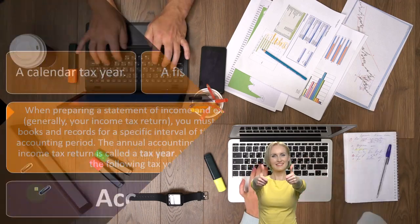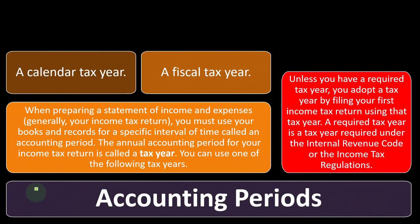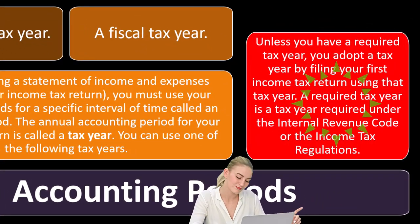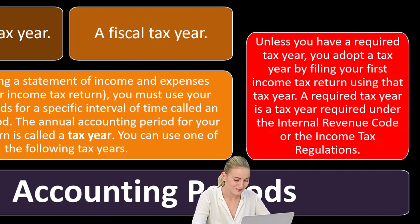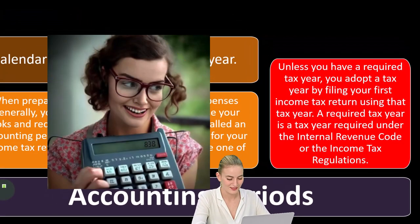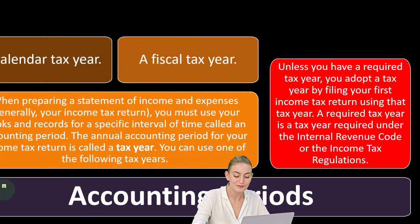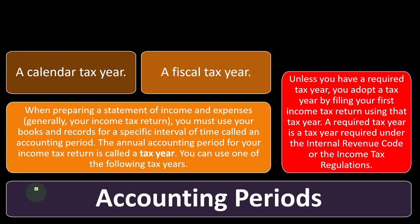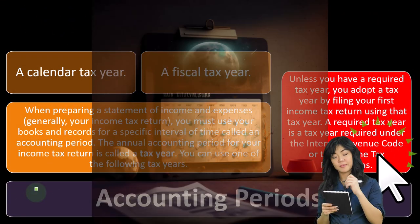Unless you have a required tax year, you adopt a tax year by filing your first income tax return using that tax year. You want to make sure you get this right from the start. A lot of small businesses that are sole proprietors will be on a calendar year. But if you're going to make a change, you want to research it and get off on the right track, because it might be difficult to change after you've already started adopting one particular calendar year.